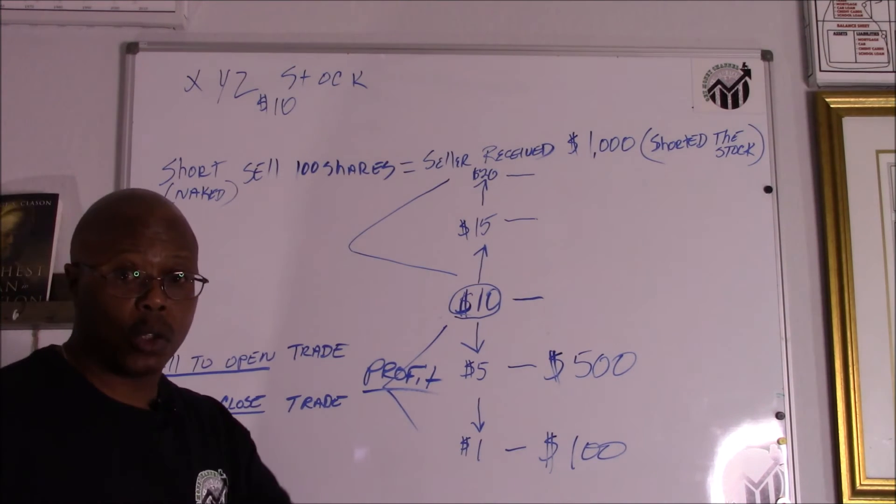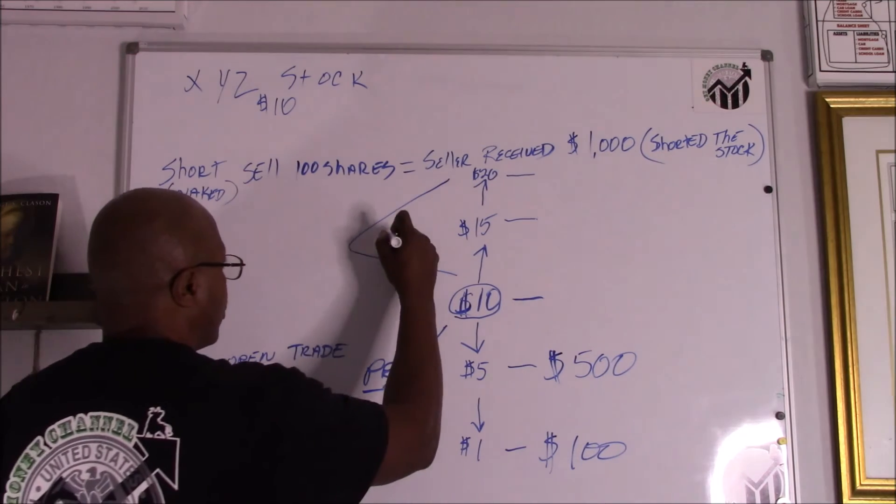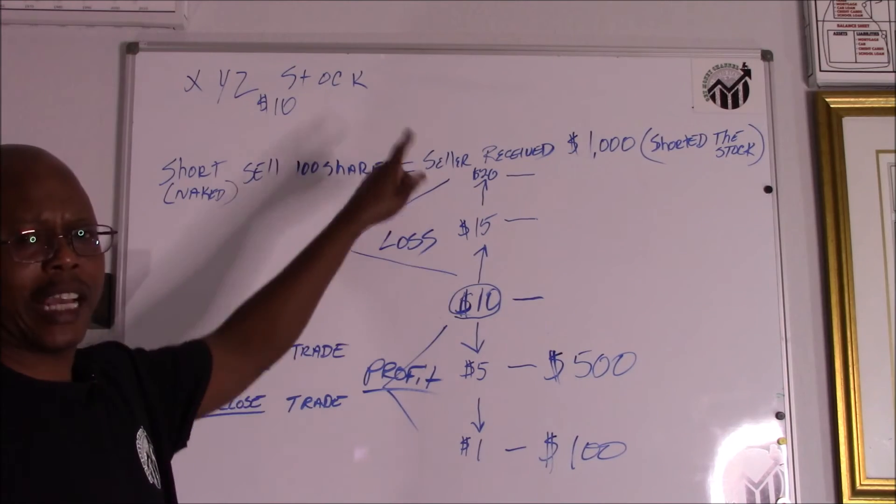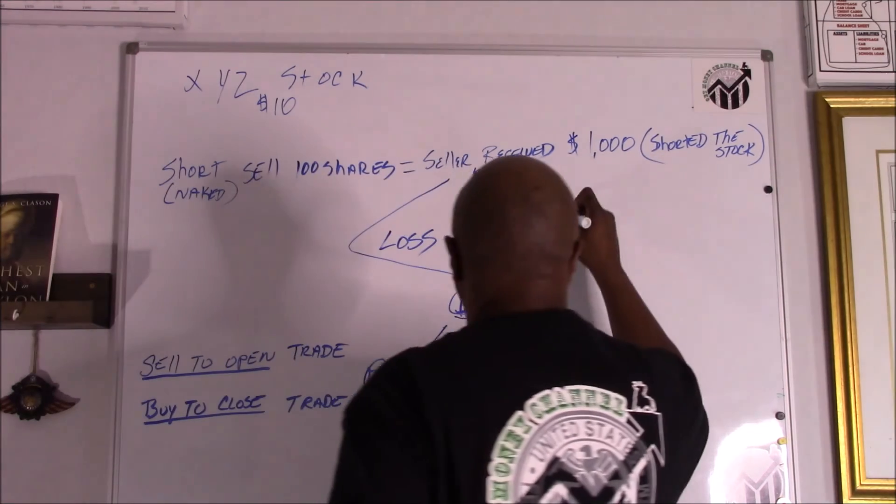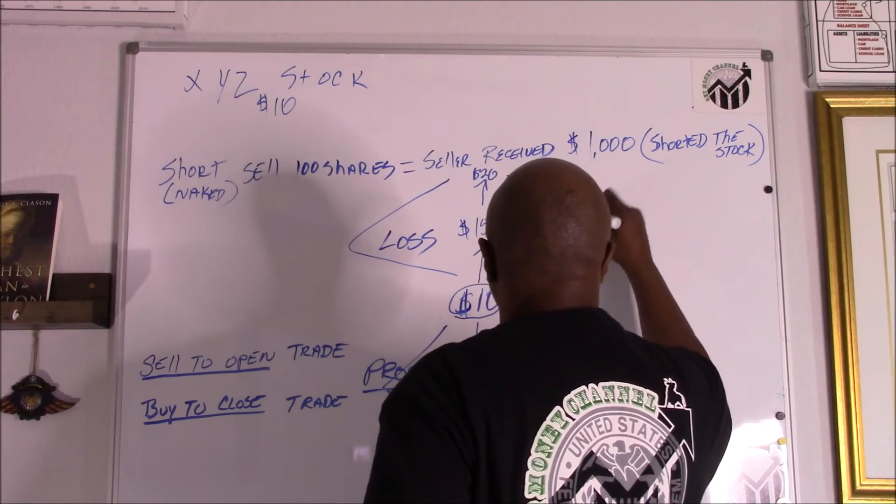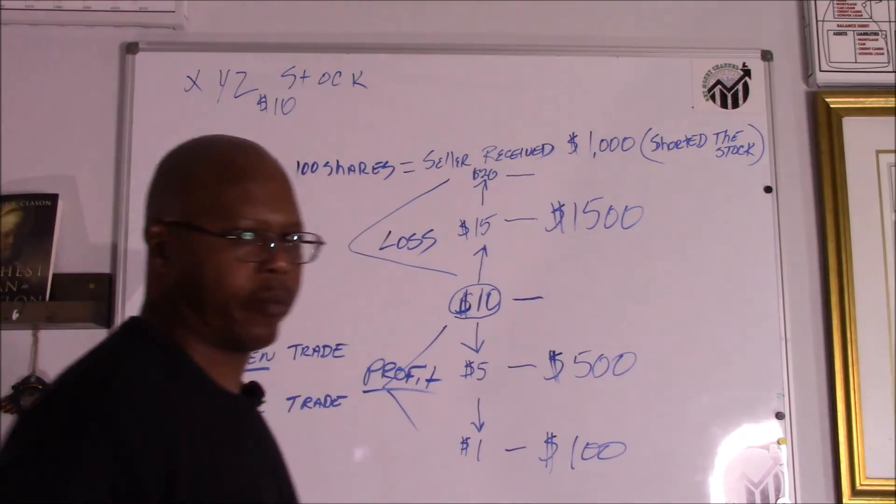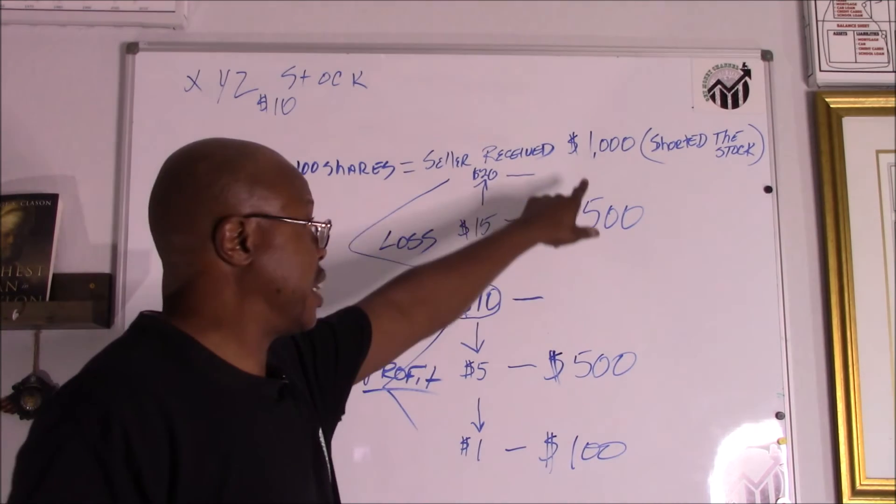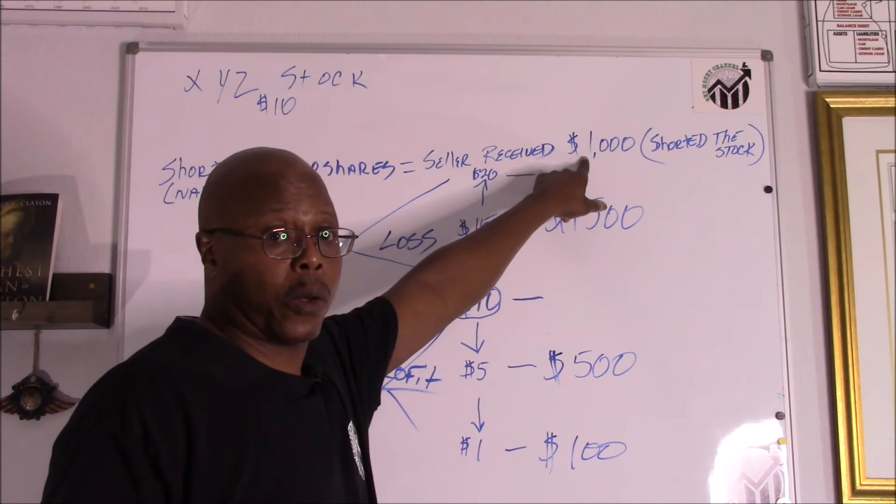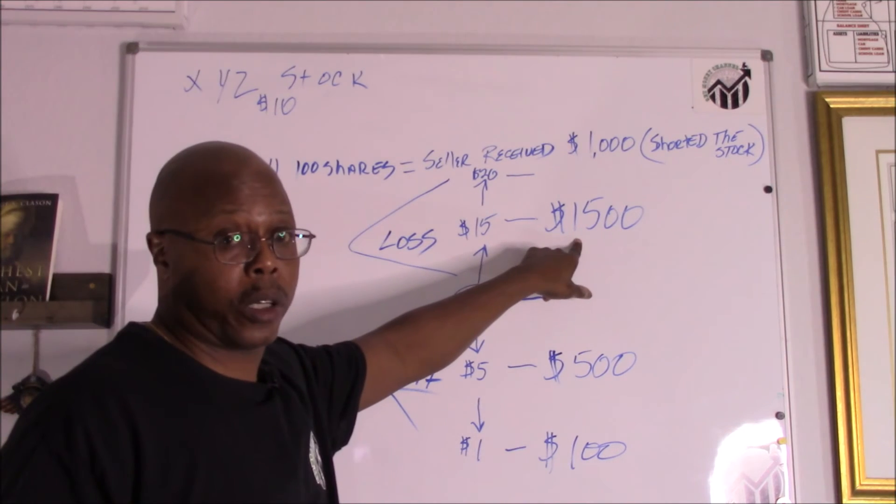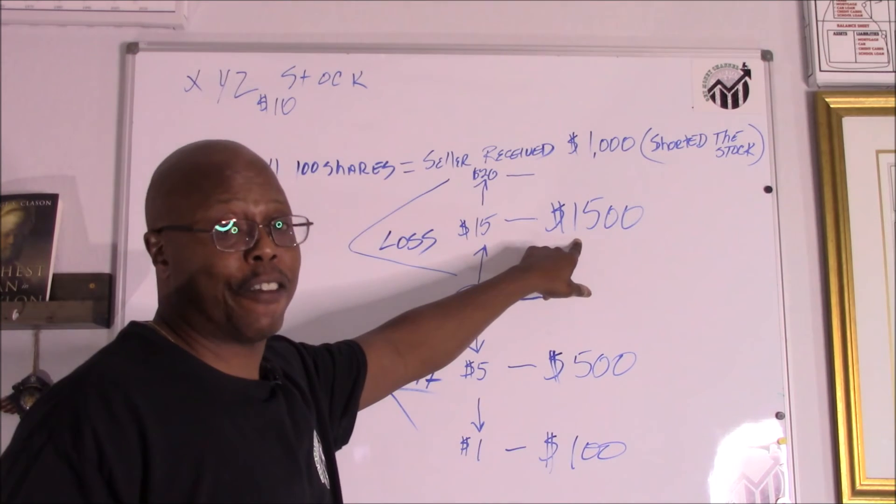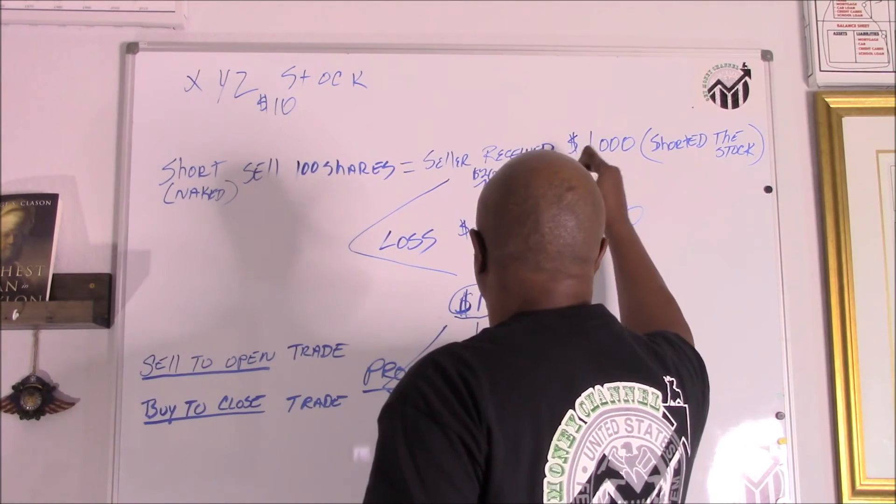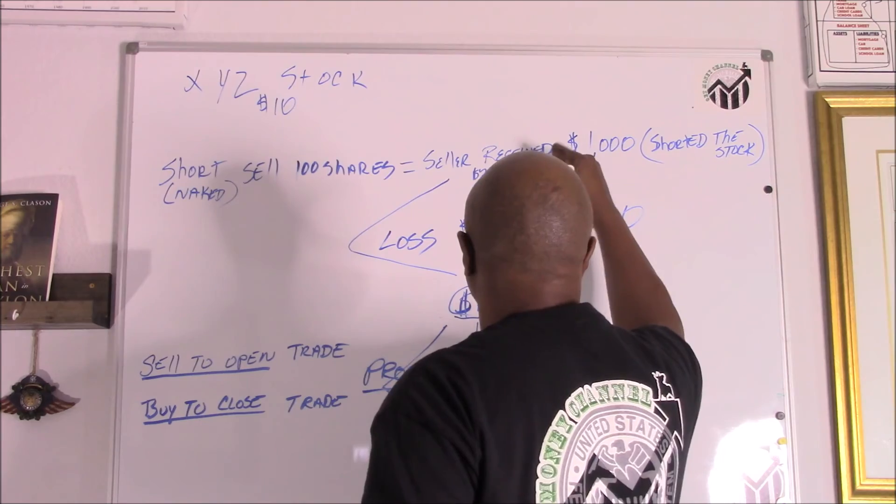However, if it goes the opposite way, it's a loss. In other words, let's say the $10 stock goes to $15. So now you're looking at $1,500. This person now is going to owe $500 because they got that $1,000 in their collateral account. Now in order to close this out they have to pay $1,500, a $500 loss. If it goes up to $20, that's $2,000, that's a $1,000 loss.